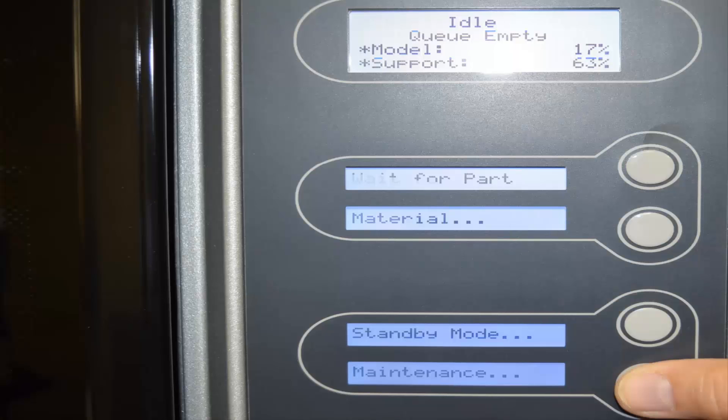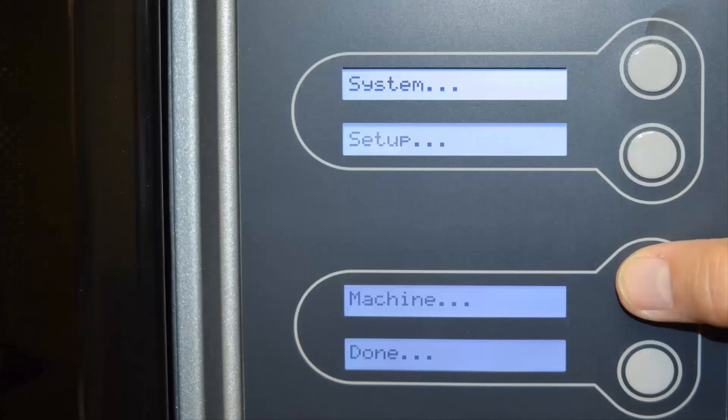The first thing you want to do from the idle screen of the printer panel is select the option to go into maintenance mode.